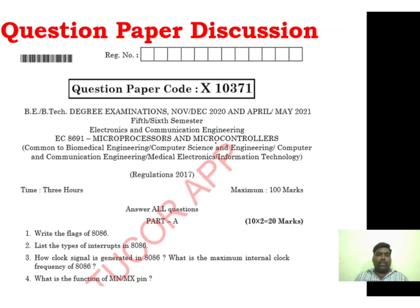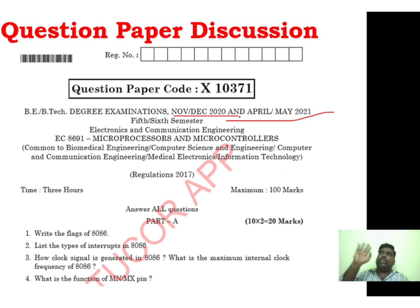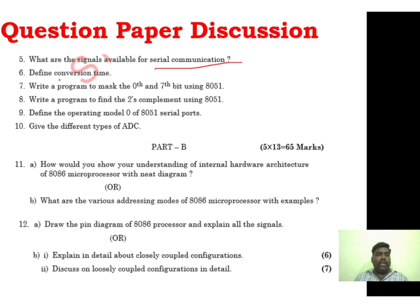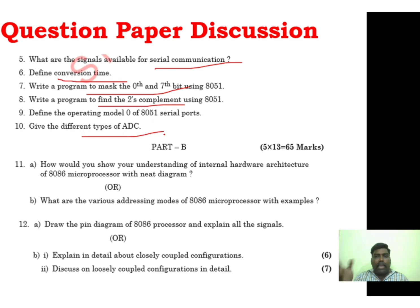Now we will see the question paper. The question paper is from May 2021 and 2020. Let's look at this. Over a 5-year course, you can get 2-mark questions. Study 2-mark questions — you can get 8 or 9 questions. The most repeated topics are: flags of 8086, interrupts of 8086, clock signal generation in 8086, MN/MX pin, serial communication, write a program to mask, write a program to implement, 8085 programs, different types of ADC. Study the programs — you can match the concept of each program.